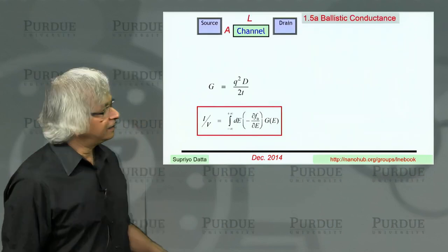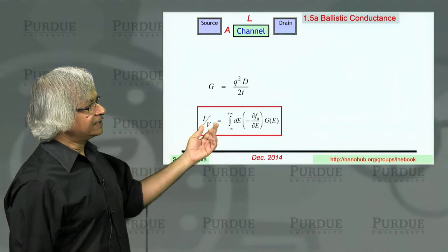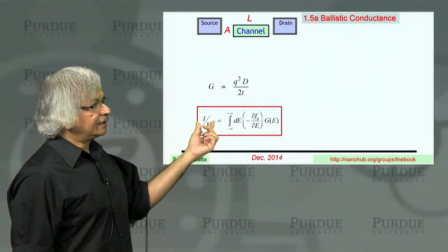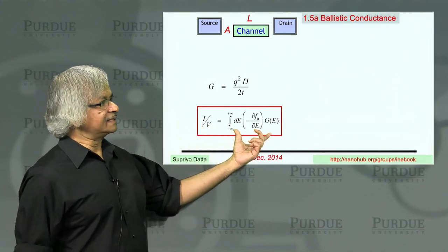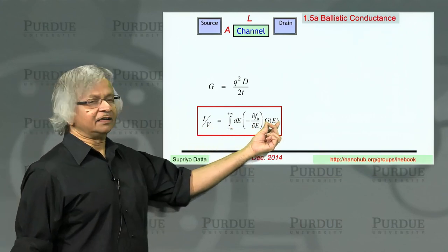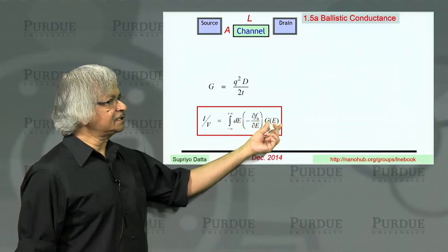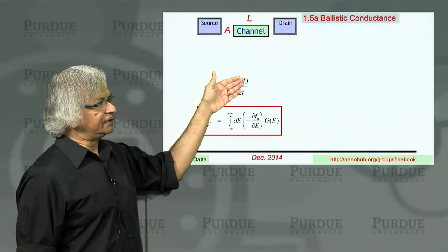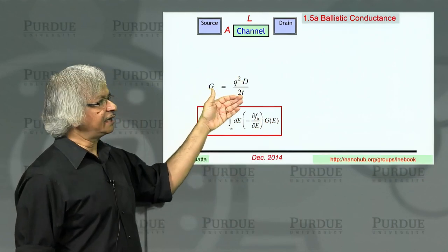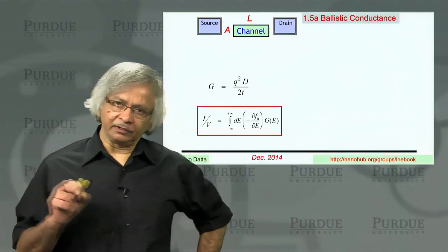In the last lecture, we showed that the current divided by voltage is given by this average of a conductance function, this average over energy. And the conductance function itself at any given energy depends on the density of states at that energy and the time it takes for an electron to get from left to right.